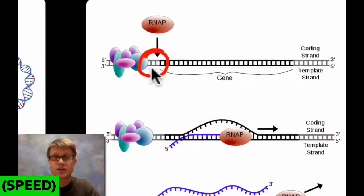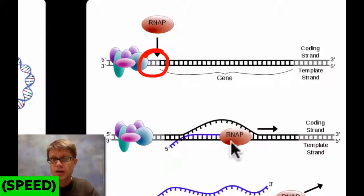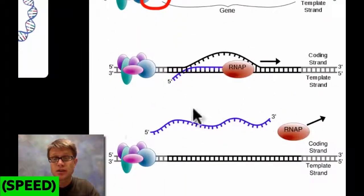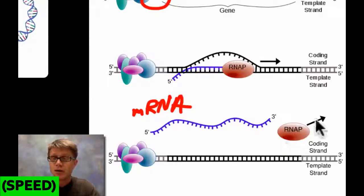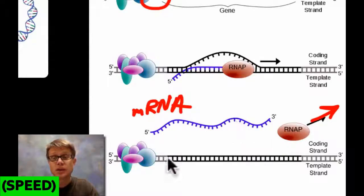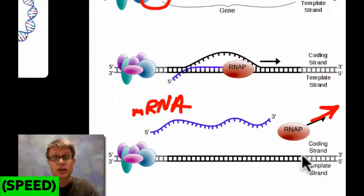There are a number of transcription factors that allow transcription to occur. As RNA polymerase moves down that DNA, it creates a copy behind it called messenger RNA. As RNA polymerase takes off, the message is left behind and the DNA zips back together again. We have initiation, elongation, and then finally termination, resulting in the creation of that messenger RNA.